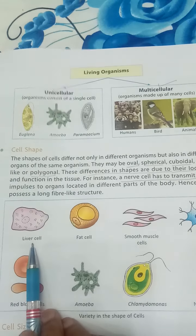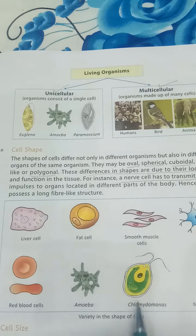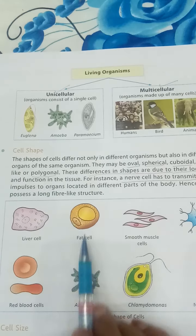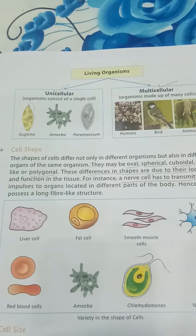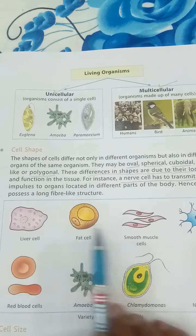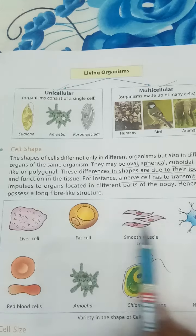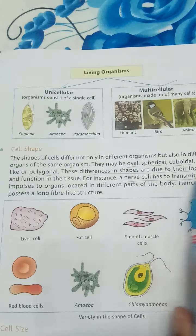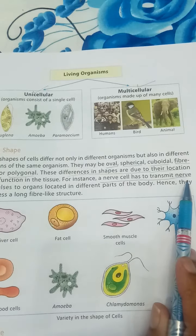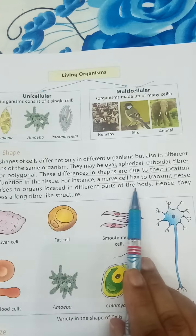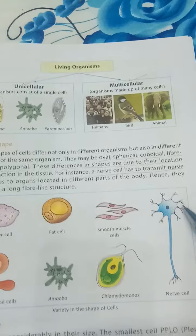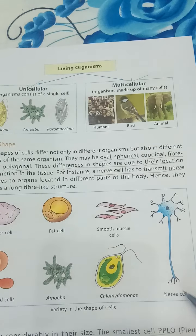Now coming to cell shape — you can see here that different types of cells have different shapes because of their location and function. They have different functions in the body, so they have different shapes. For example, a nerve cell has to transmit nerve impulses to organs located in different parts of the body, hence it has a fiber-like structure.